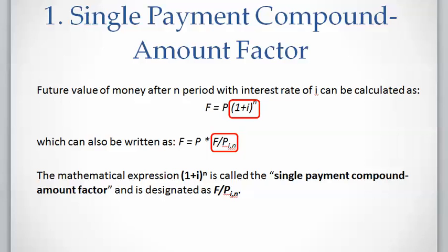The mathematical expression (1+i)^n is called the single payment compound-amount factor and is designated as the factor F/P subscript i,n. This factor is called single payment compound-amount factor because the future single sum of money F needs to be calculated given a present single sum of money P at a given interest rate of i after a given number of compounding periods n.